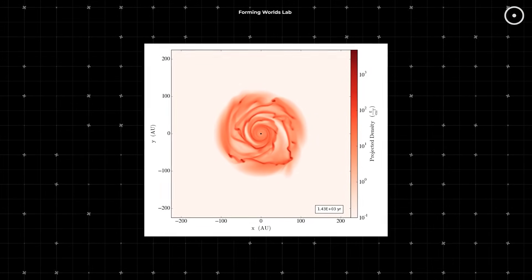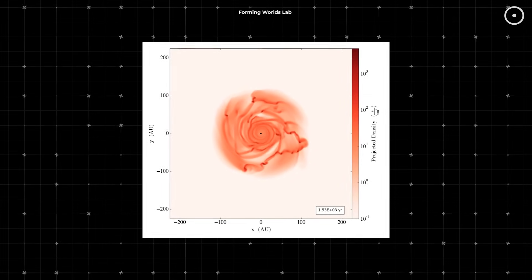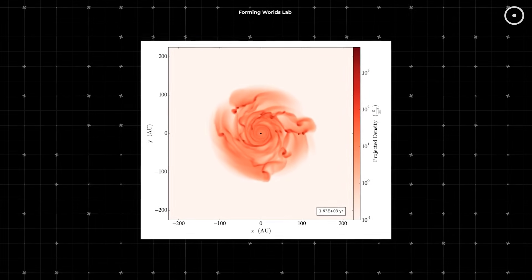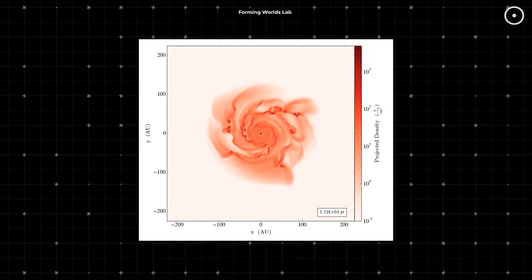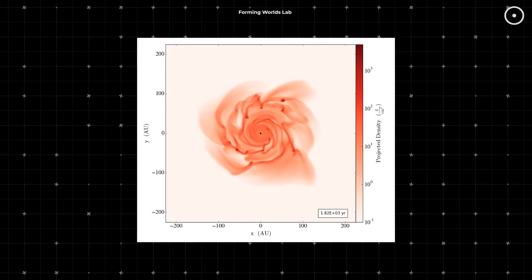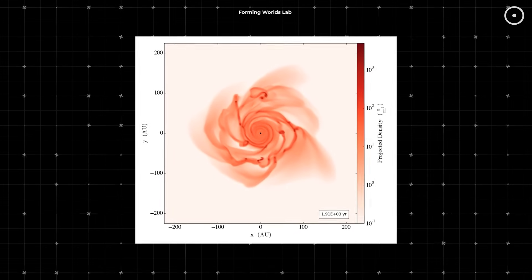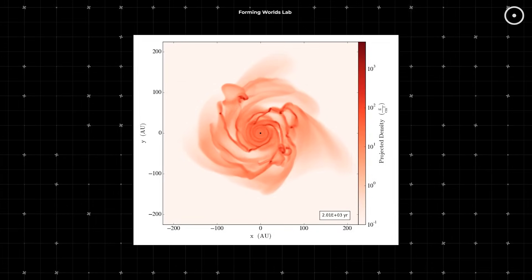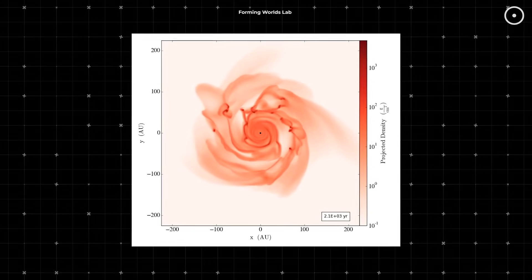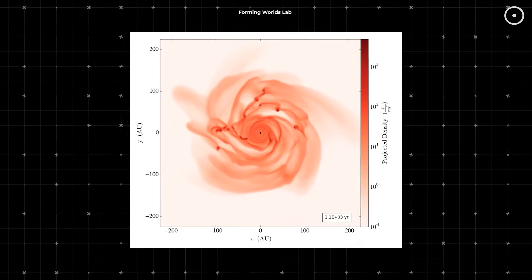We've already discovered over 5,000 planets around other stars, and each one of those planets probably started out just like what we're seeing in HH-30. Tiny specks of dust, slowly coming together in a cosmic dance. And this is where the story gets even more interesting.